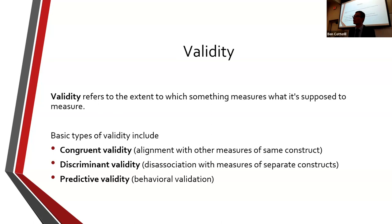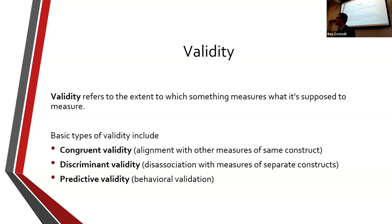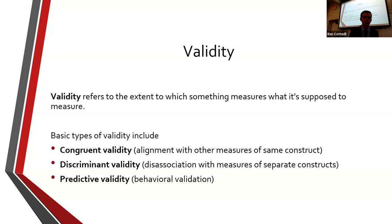In the quiz and the exam, there will be questions making sure you can tell these types of reliability apart, explain them, and identify them. Validity is the extent to which something is actually measuring what we want it to measure. If I have a questionnaire for measuring shyness, is it actually measuring shyness, or is it measuring emotional stability, or something else that's not exactly what I intended? It has to be measuring what I actually intended.